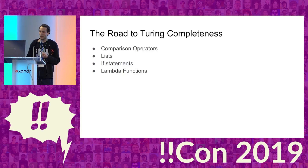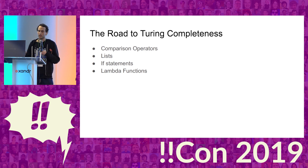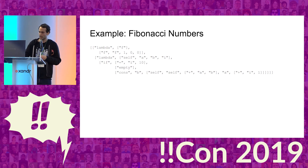Now that we have our basic calculator, we can start thinking about what features we need to add to get our language to a Turing complete language. Once we have these features, we can start writing some real programs — for example, here's a program that will generate the first 10 Fibonacci numbers. So let's go through those features and add them one at a time.